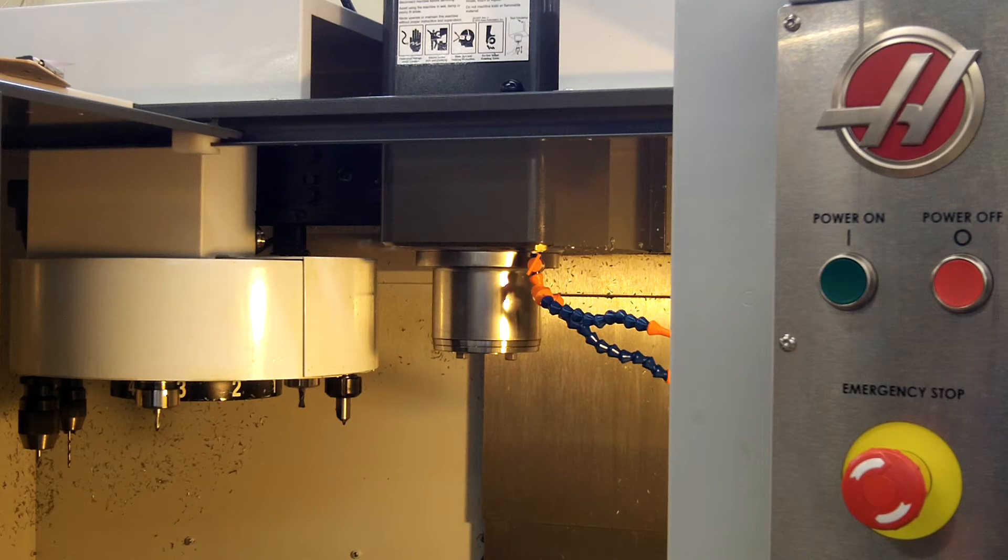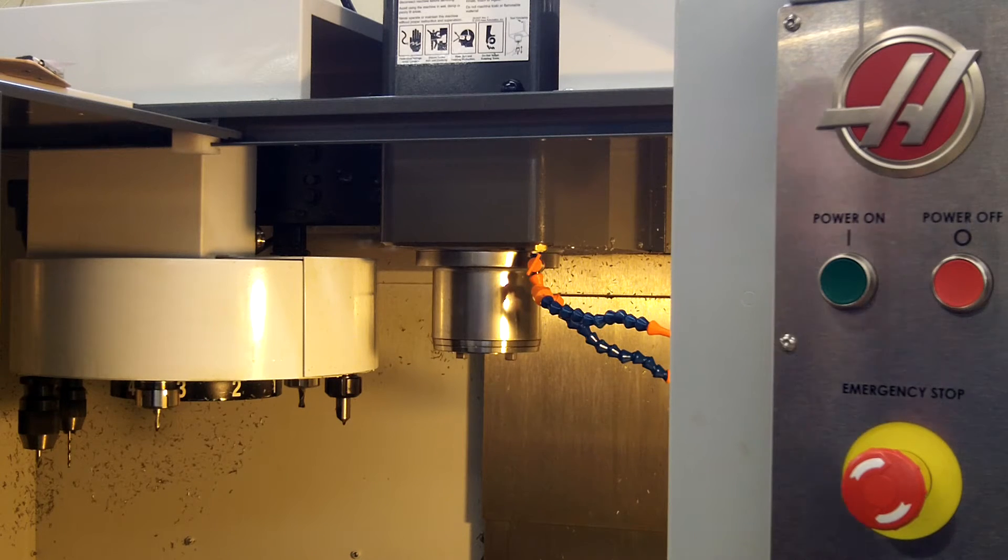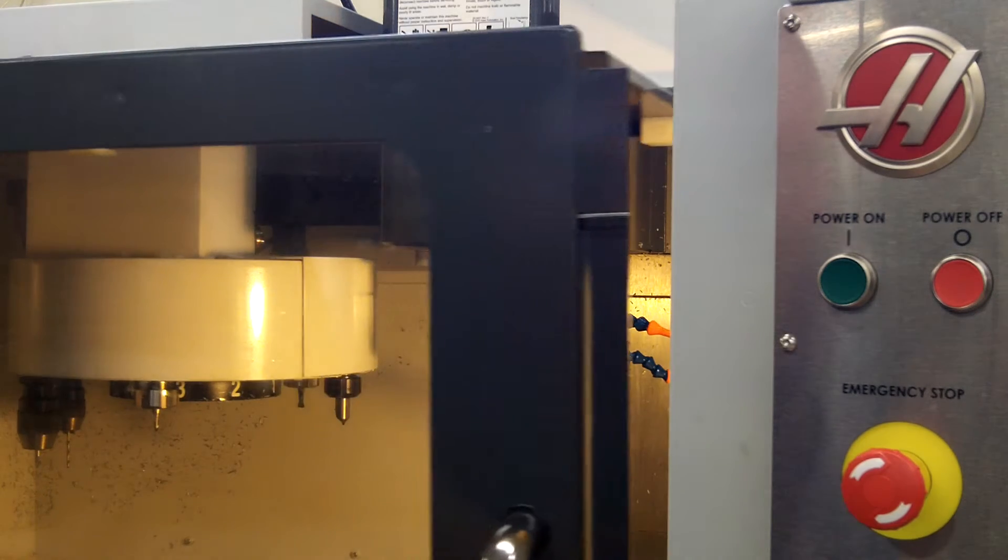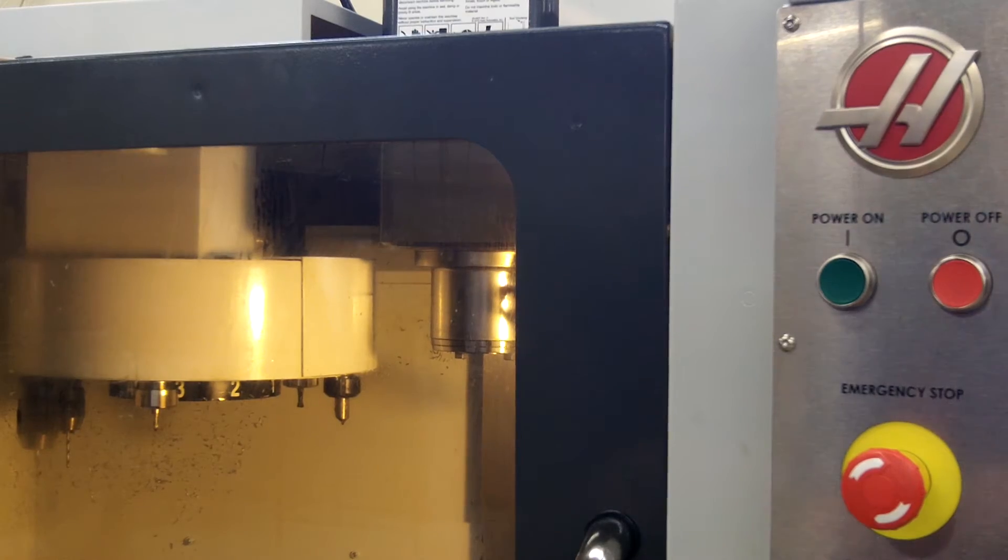Now that the tool has been removed from the spindle, if we need to remove any other tools, we can do so. What you will do is shut the door, come to the controller.